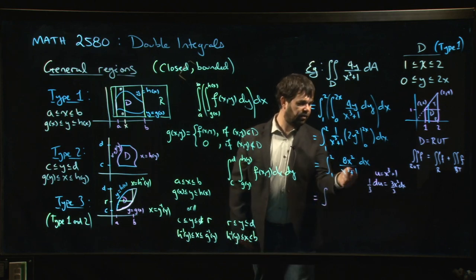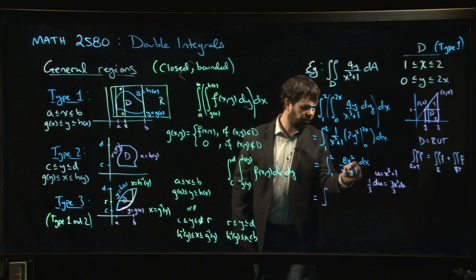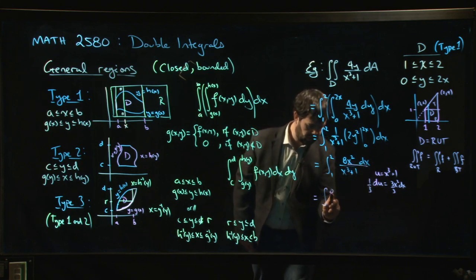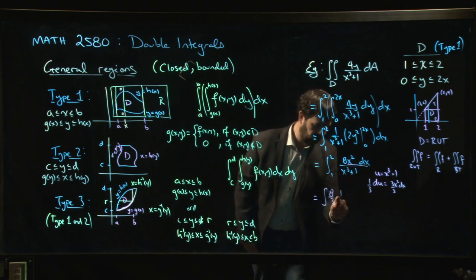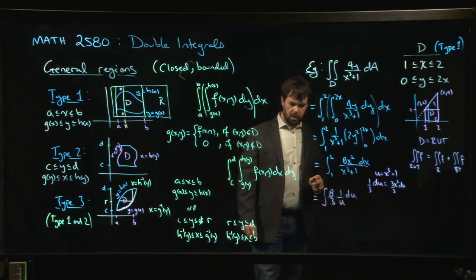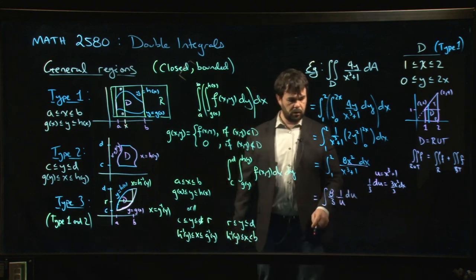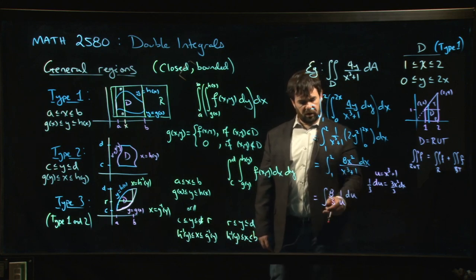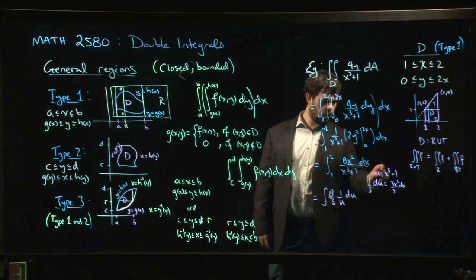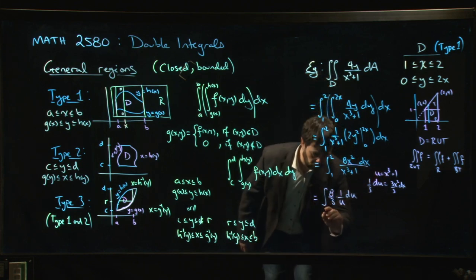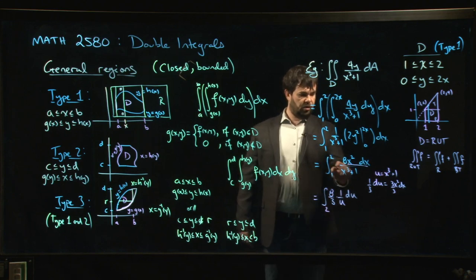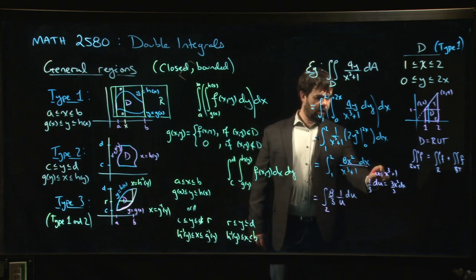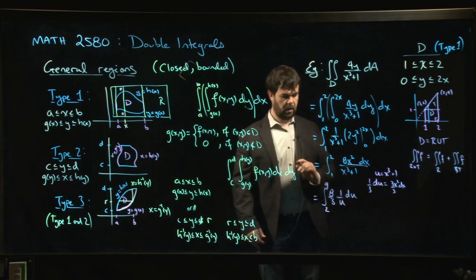Let's see: that 8 is still there. The x²dx—there's my du/3. So I have 8/3 times 1/u, integrating with respect to u. One more thing we need to do: 1 and 2 were the limits for x, not for u. Let's change things up. If x=1, u will be 1+1, so u=2. If x=2, u will be 2³, that's 8, plus 1 gives 9.